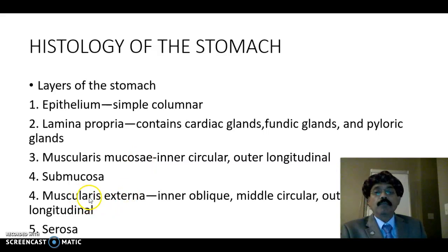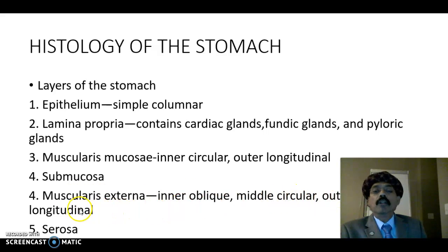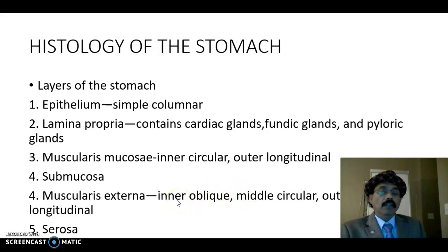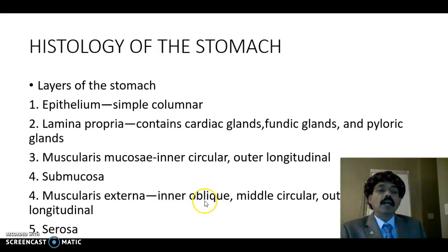Then we get another set of smooth muscle — the muscularis externa. It has three layers: the inner oblique muscle layer, the middle circular layer, and the outermost longitudinal muscle. In other parts of the gastrointestinal system there are only two layers without an inner oblique layer, but here in the stomach we have the additional inner oblique layer. These layers are prominent along the lesser curvature of the stomach. Outside the muscle we have the serosa.